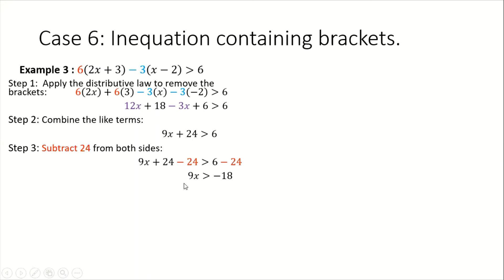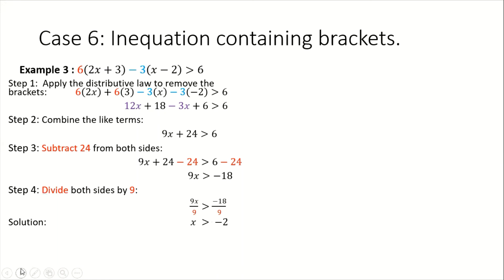Now we only have one step to go. Note that 9 is used to multiply x, so the opposite of multiplying by 9 is to divide both sides by 9. That gives us 9x all over 9 greater than negative 18 all over 9. When we simplify, that gives us x is greater than negative 2. Hence, the solution set is the set of all x values such that x is greater than negative 2.